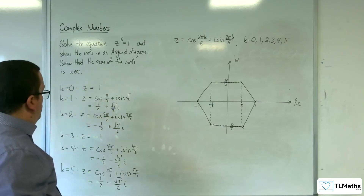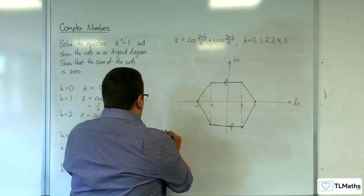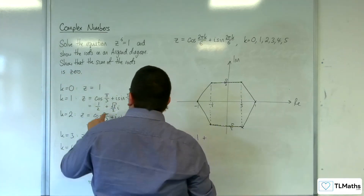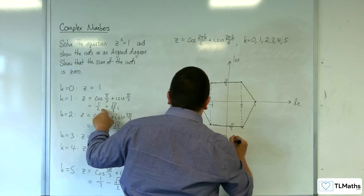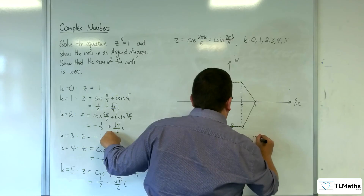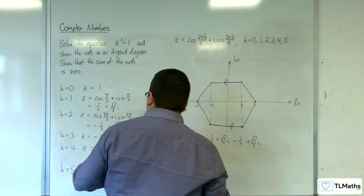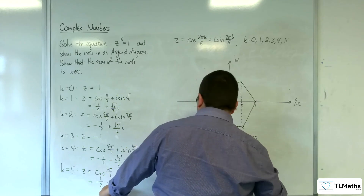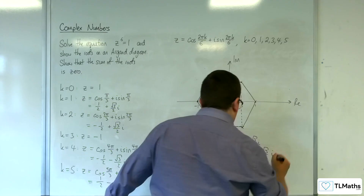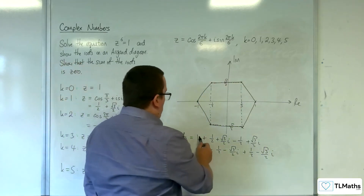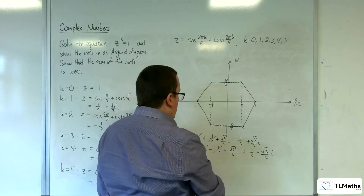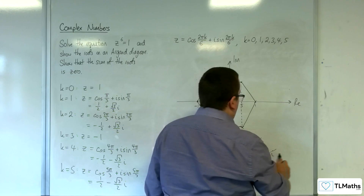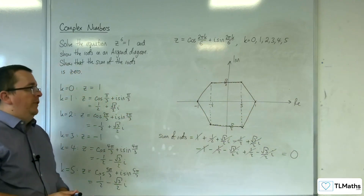The last thing: show that the sum of the roots is 0. So the sum of the roots equals 1, plus 1 half plus root 3 over 2i, take away 1 half plus root 3 over 2i, then take away 1, take away 1 half, take away root 3 over 2i, and then plus 1 half take away root 3 over 2i. We've got 1 take away 1, 1 half take away 1 half, root 3 over 2i take away root 3 over 2i, minus 1 half plus 1 half, and root 3 over 2i take away root 3 over 2i. So summing the roots, you get 0 as required.